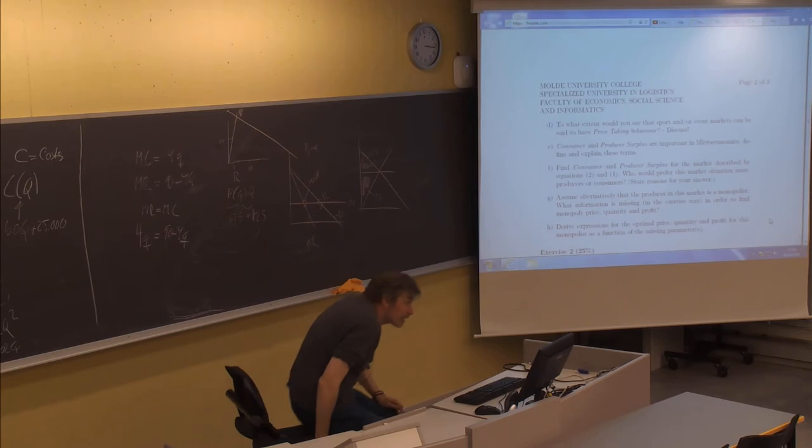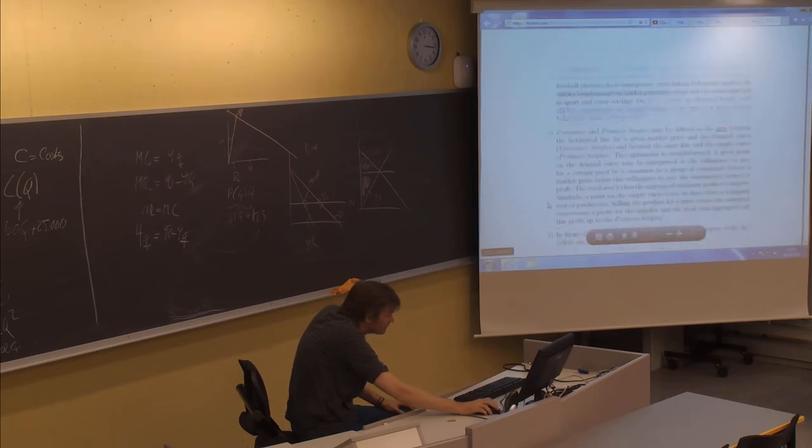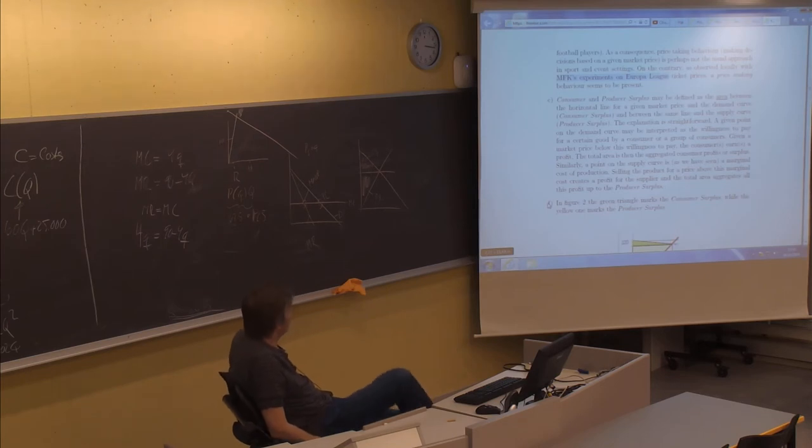Consumer and producer surplus may be defined as the area between the horizontal line for a given market price and the demand curve (consumer surplus) and between the same line and the supply curve (producer surplus). The explanation is straightforward. A given point on the demand curve may be interpreted as the willingness to pay for a certain good by a consumer or group of consumers. Given a market price below this willingness to pay, the consumers earn a profit. The total area is then the aggregated consumer profits or surplus. Similarly, the point on the supply curve is a marginal cost of production.